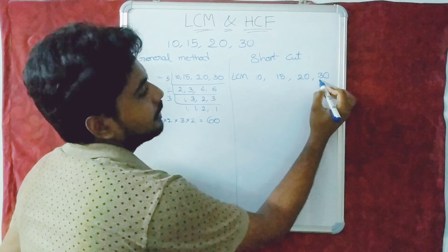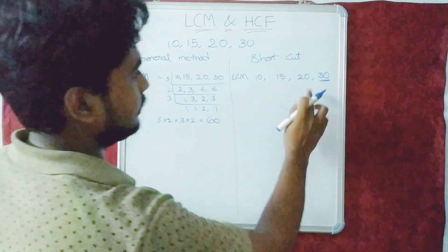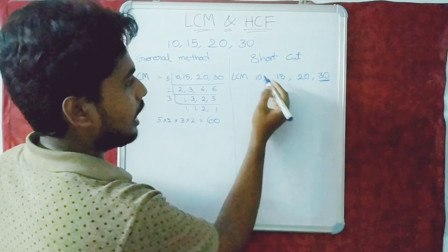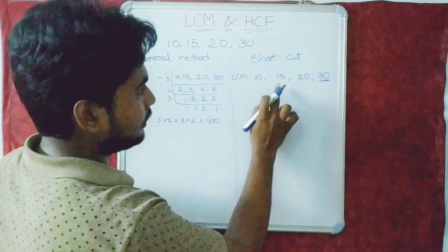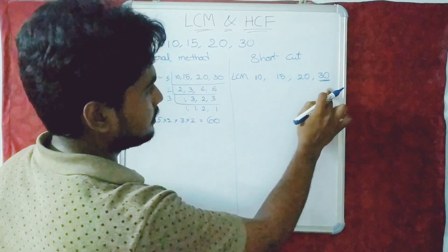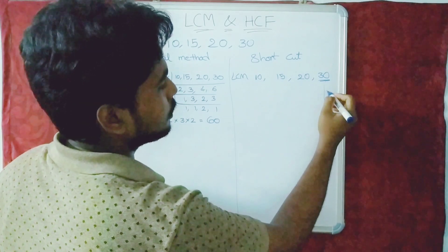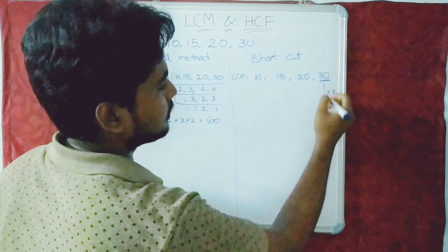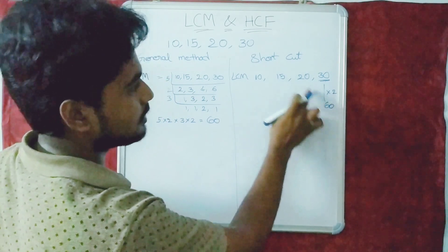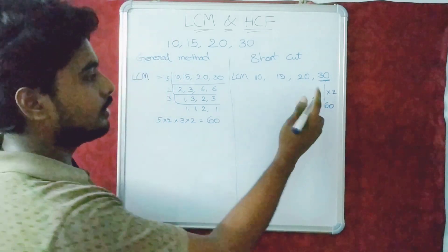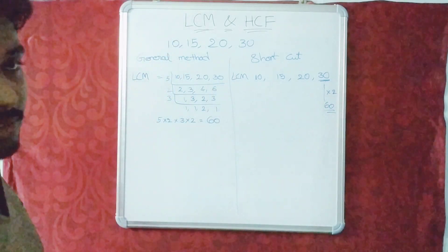Take the biggest number in the given numbers and check if all the numbers divide it. 10 divides, 15 divides, but 20 does not, so double it to get 60. Now 10 divides 60, 15 divides 60, and 20 also divides 60, so the LCM of these numbers is 60. See how simple it is!